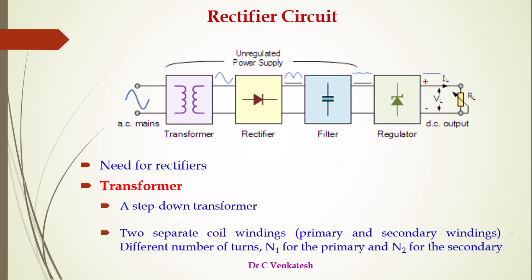The figure consists of several blocks. The input side AC mains is given to the transformer, transformer to the rectifier circuit, rectifier to filter, filter to the regulator, and then the DC output. The transformer, rectifier, and filter form the unregulated power supply. The unregulated power supply output is given to the regulator, that is the voltage regulator. The regulator output is a regulated power supply — that is why we have the DC output.